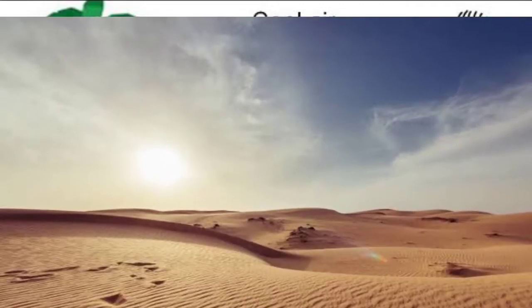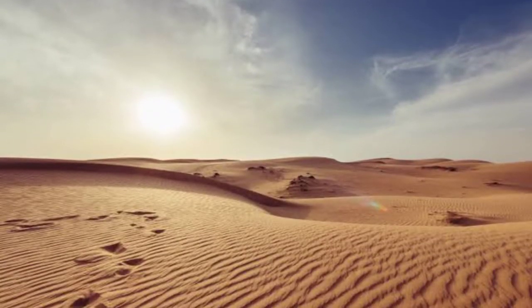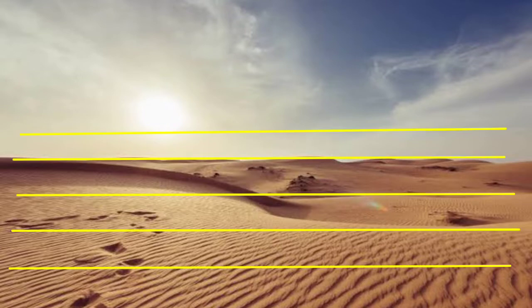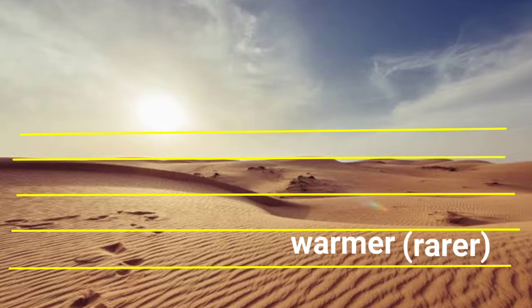In a desert, the sand becomes very hot during the daytime. Therefore, the layers of air near the ground are warmer than the upper layers. This means the layers of air near the land are rarer and the successive upper layers are denser. As you go up, it becomes gradually cooler, and at the bottom, it is much warmer.